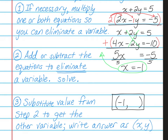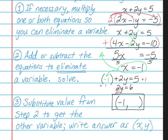I'll choose the top equation because the numbers look a little smaller. So instead of x, I write parentheses: (negative 1) plus 2y is equal to 5. Adding 1 to both sides gives 2y equals 6. Dividing by 2 gives y equals 3. So my answer is negative 1, comma 3. That means if I were to graph these two equations, they would intersect at the point negative 1, comma 3.